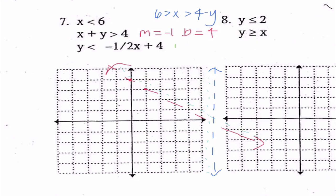But we have a third inequality. Thankfully it's in slope-intercept form: slope is negative 1 half and y-intercept is 4. I go up 4, then down 1 and over 2, down 1 and over 2. This line is dashed. Substituting (0, 0): 0 is less than 4, which is true — so I shade on this side. Looking carefully, the shading overlaps in a little triangle. To be confident, I'd choose a point in that triangle and substitute it into all three inequalities.